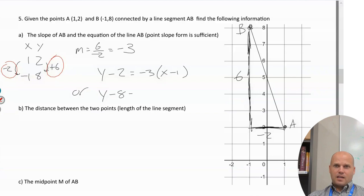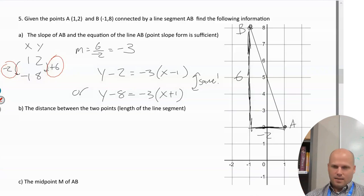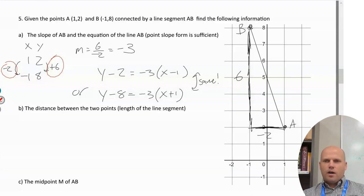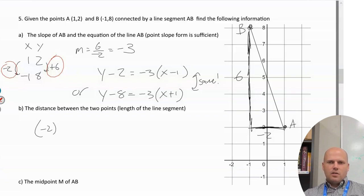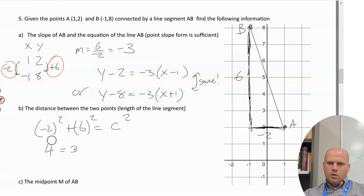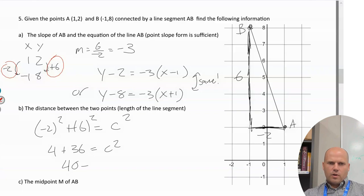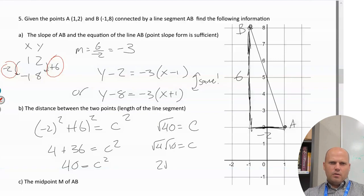Next, the distance between the two points. We already have the right triangle set up with x-distance = 2 and y-distance = 6. Using a² + b² = c²: 4 + 36 = c², so c² = 40, c = √40 = √4 × √10 = 2√10.